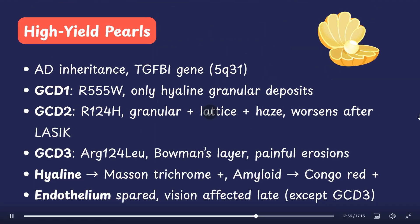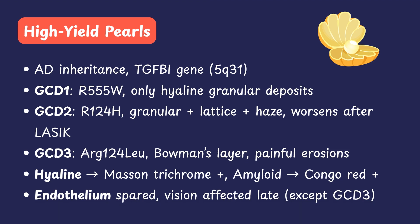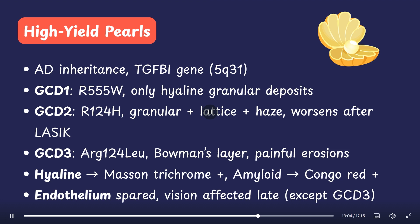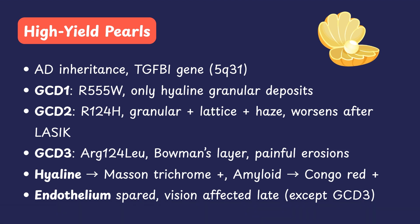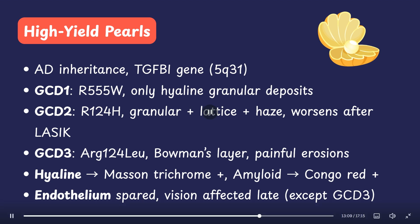Let's quickly summarize the high-yield pearls for granular corneal dystrophy. Inheritance is autosomal dominant. Gene involved is TGF-β1. Subtypes: GCD1 has only hyaline deposits; GCD2 has both hyaline and amyloid deposits; GCD3 is Reis-Bücklers dystrophy or Bowman's layer dystrophy with painful recurrent erosions. Pathology: hyaline deposits stain with Masson's trichrome; amyloid stains with Congo red and shows apple green birefringence under polarized light.